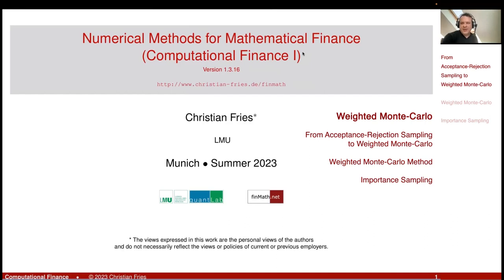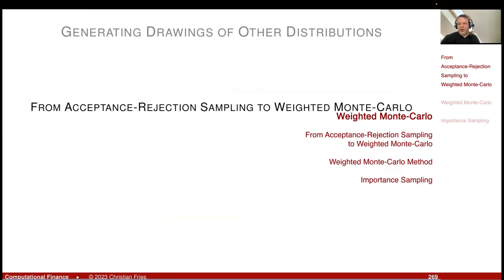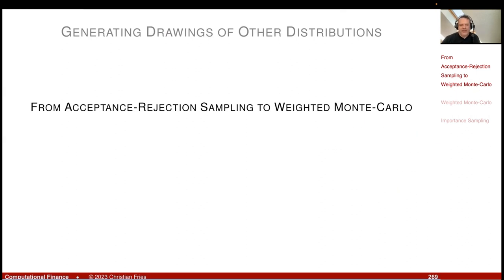Welcome to Numerical Methods. What I would like to do now is have another look at the acceptance-rejection method and plug it into our application, Monte Carlo approximation. You will immediately see that acceptance-rejection sampling for a Monte Carlo approximation is maybe not a good idea, and there is a more efficient alternative. This alternative will lead to the weighted Monte Carlo method.